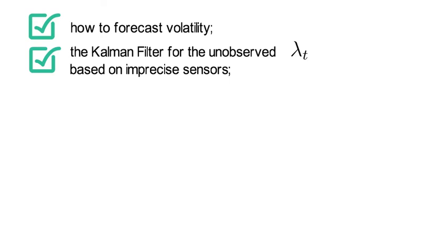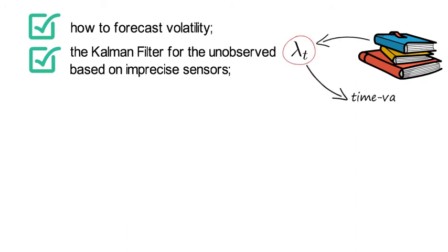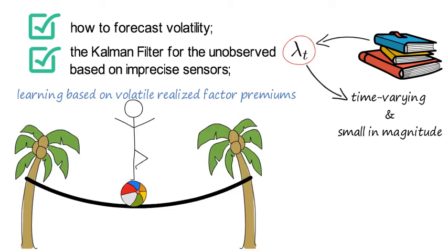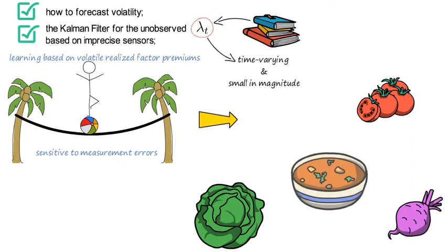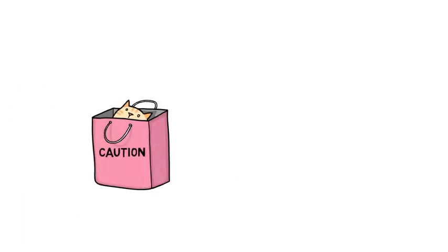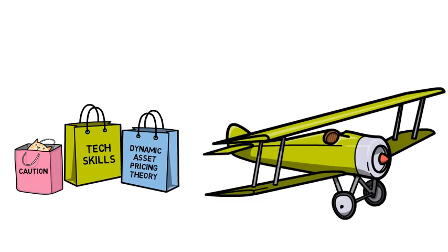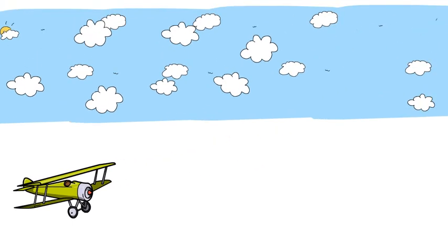The difficulty in practical work is that the literature believes right now that lambda t is time-varying and small in magnitude. So learning this value based on volatile realized factor premiums is a delicate task that is really sensitive to measurement errors. Now so that is the perfect soup for potential p-hacking, data mining, and so on. So your takeaway should be to be cautious and to combine technical skills with dynamic asset pricing theory knowledge to steer your way through the clouded sky.